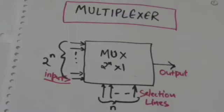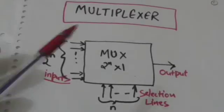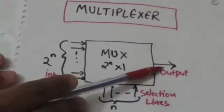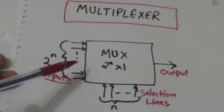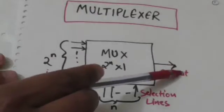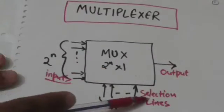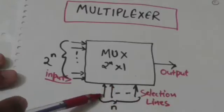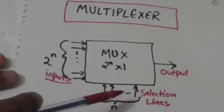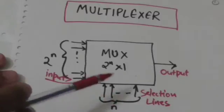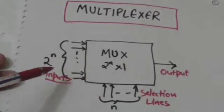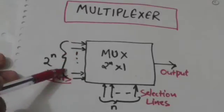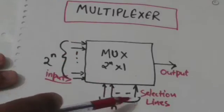In this tutorial we will study about multiplexer. A multiplexer is a combinational circuit which has many input lines and a single output line. Binary information from one of these many input lines is selected and directed to the single output line. This selection is done by selection lines — the combination applied to the selection lines determines which input line will be directed to output. If there are 2^n input lines then there will be n selection lines.